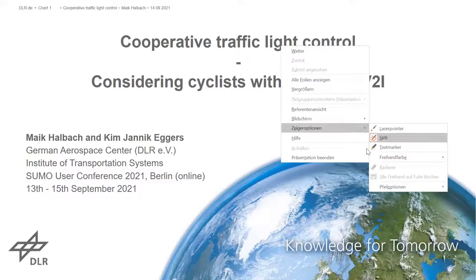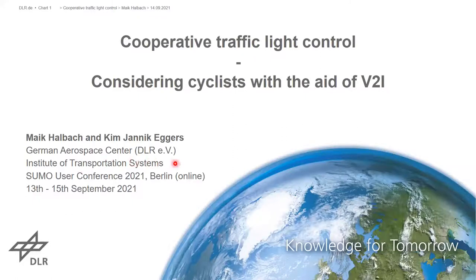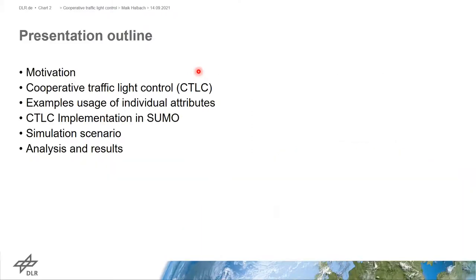My name is Mike Heilbach and I'm a research assistant at the German Aerospace Center at the Institute of Transportation Systems. I have worked on this topic with my colleague Jarvik Eggers. The presentation structure is as follows: first a short motivation for why we are working on this topic, then the basic functions of the cooperative traffic light control, an example usage of individual attributes, the implementation in SUMO, and finally the simulation scenarios and results.